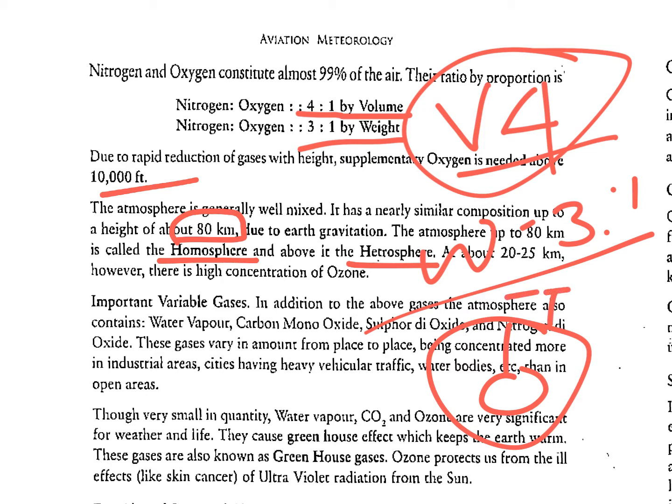Above 20 to 25 km there is a high concentration of ozone. In addition to the main gases, the atmosphere also contains variable gases such as water vapour, carbon monoxide, sulphur dioxide, and nitrogen oxide. These are present in very small amounts and vary by location.